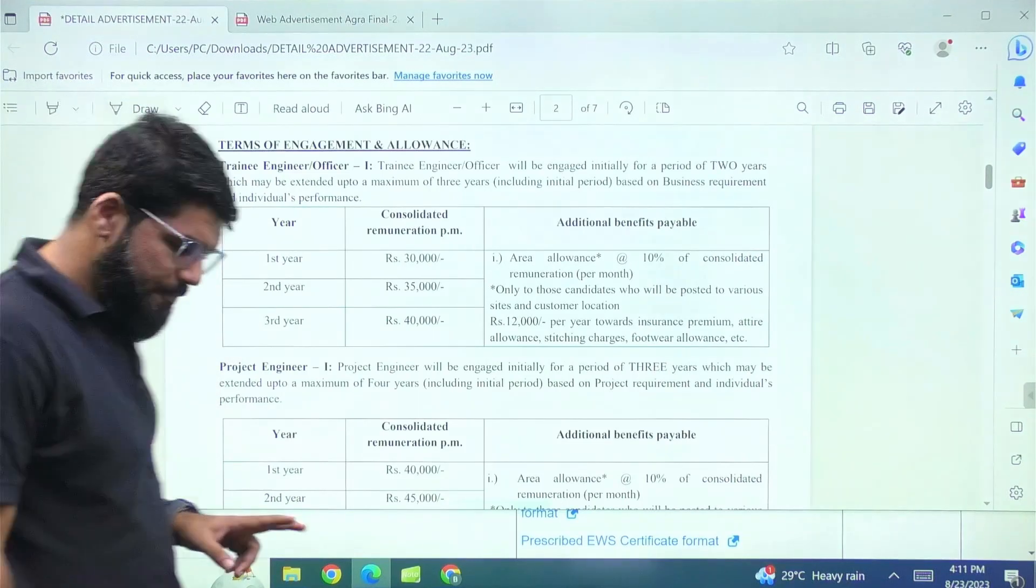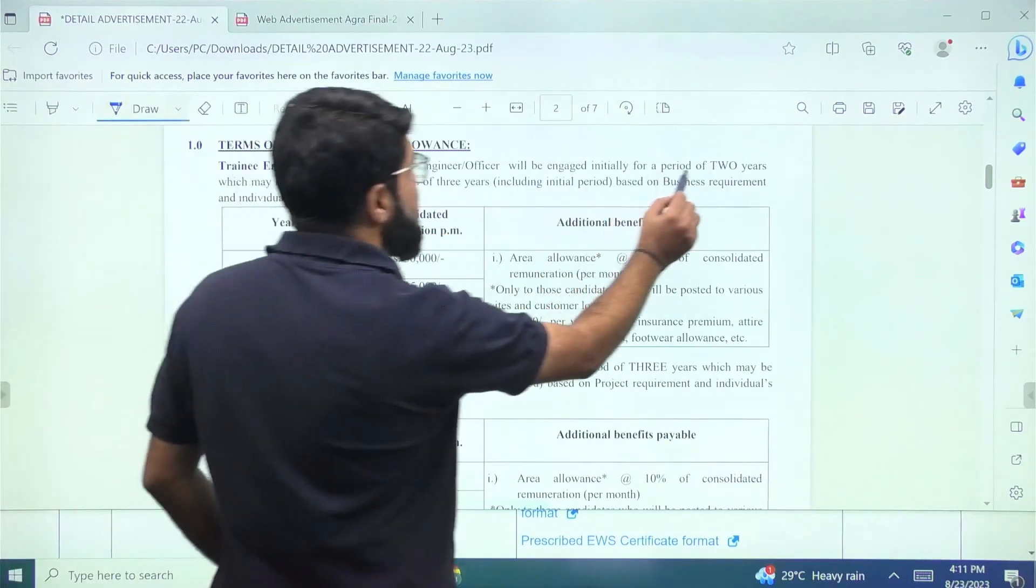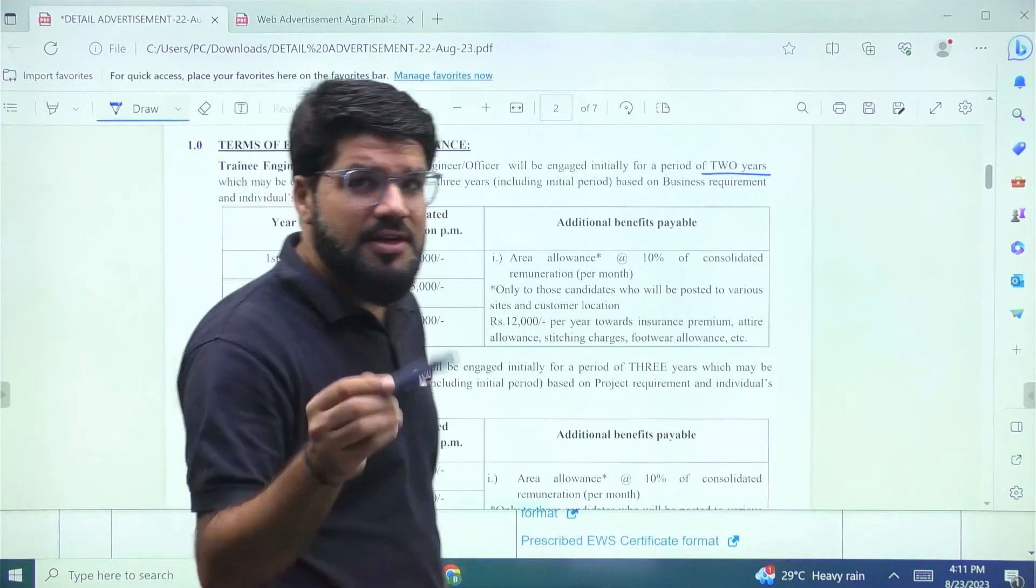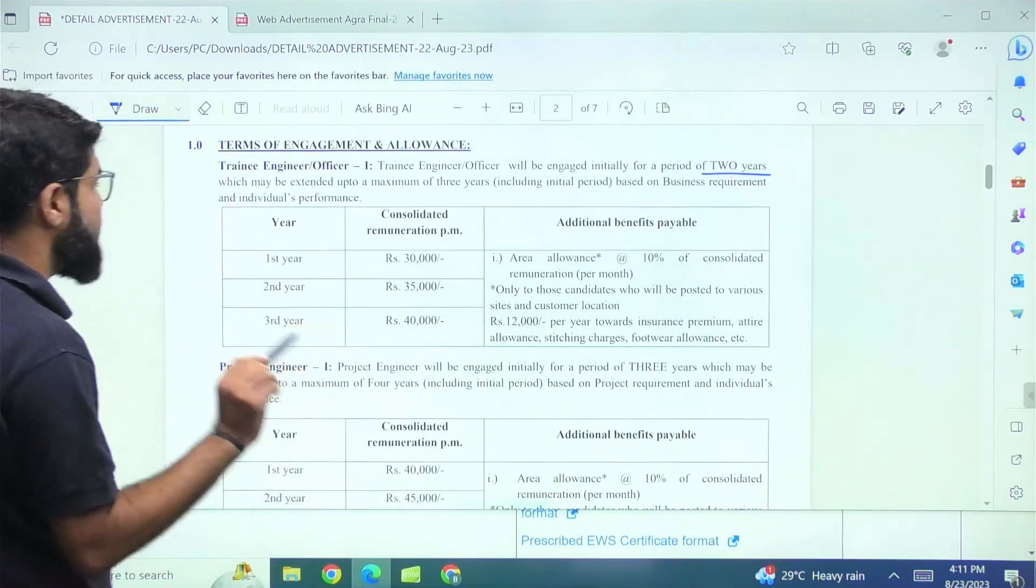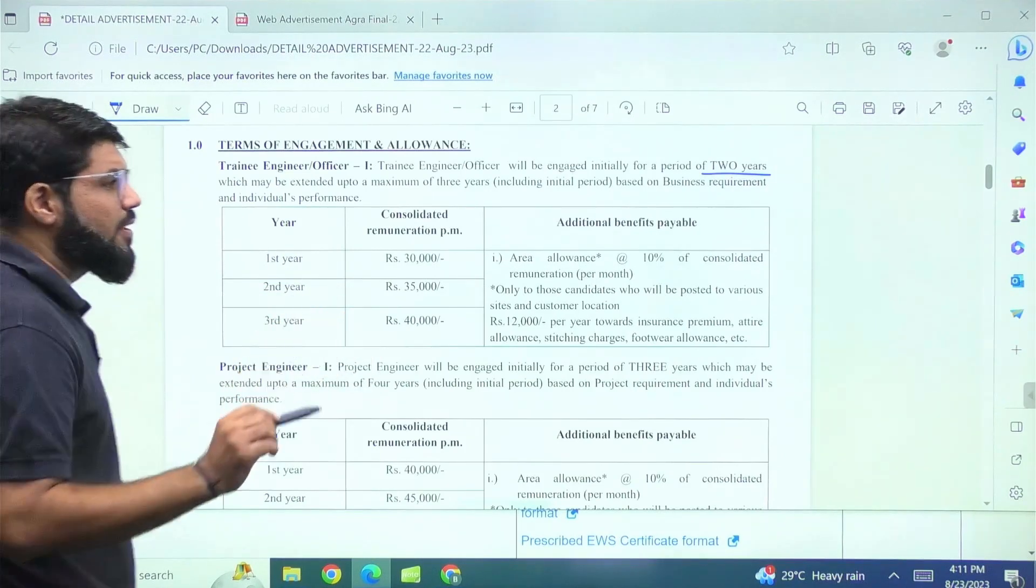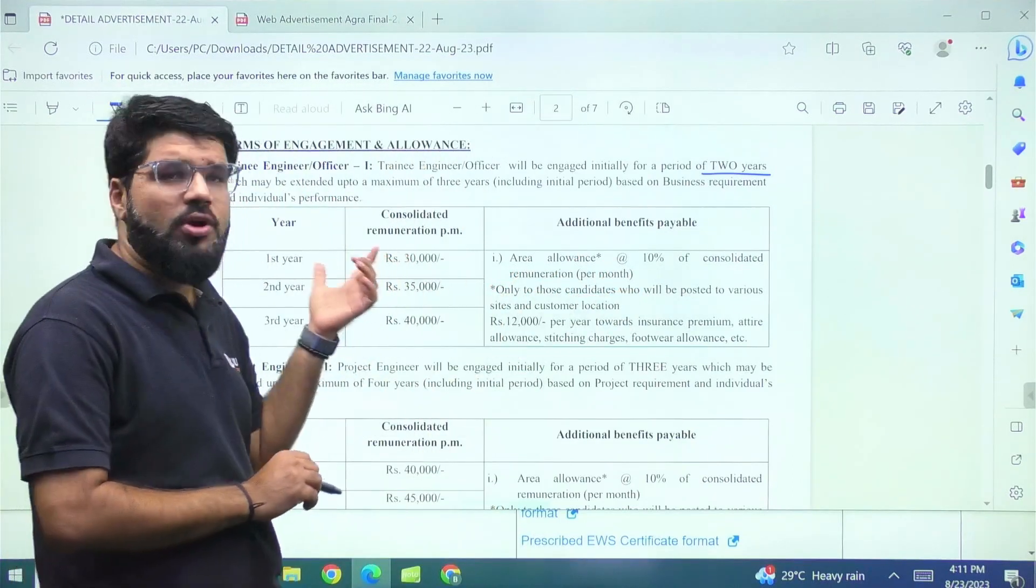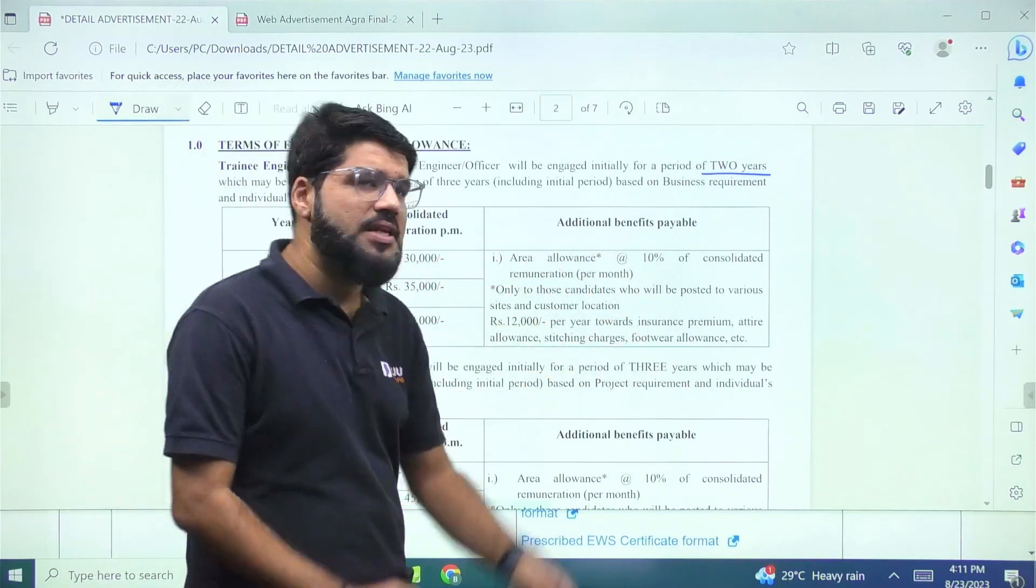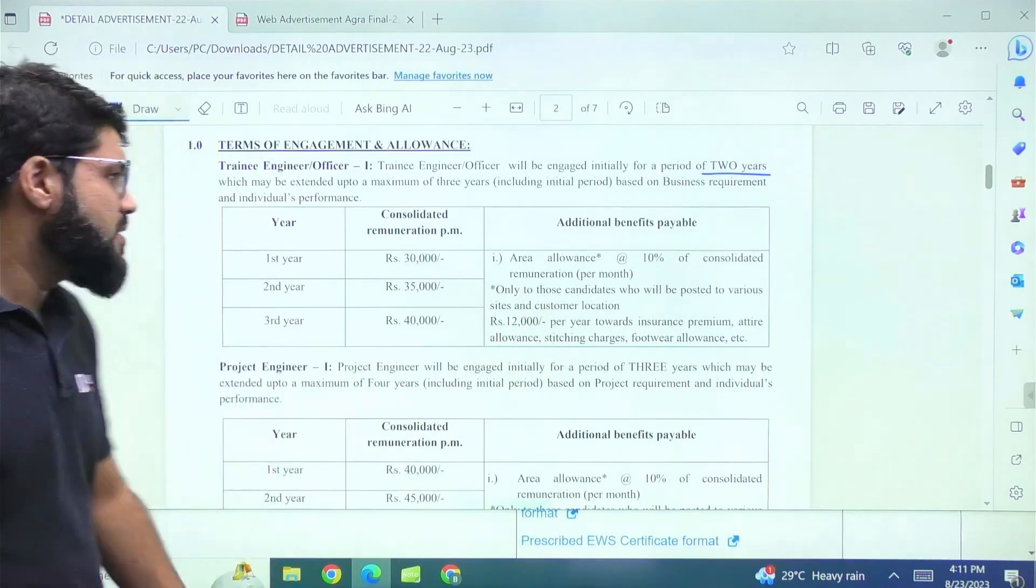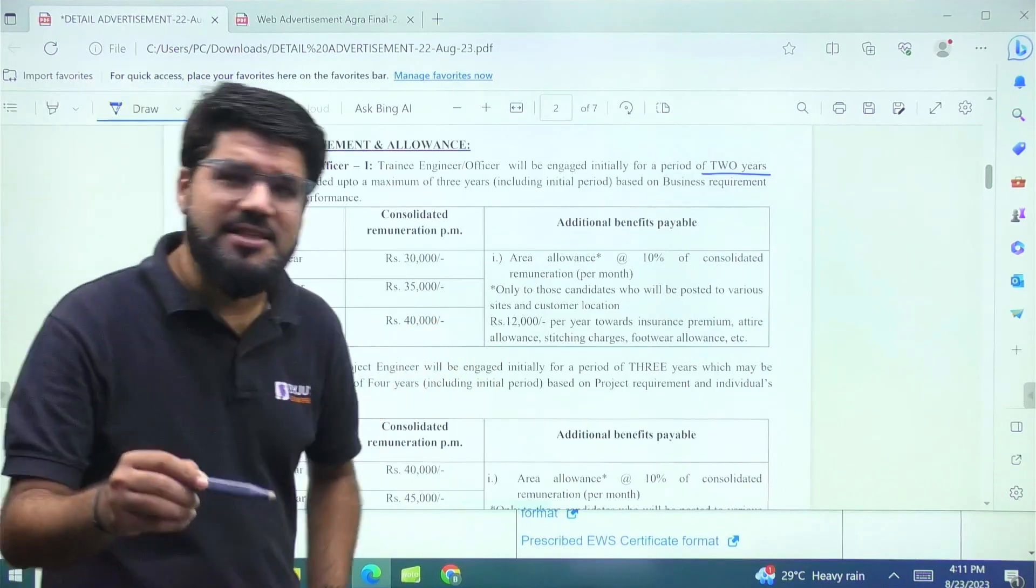8 for computer science, 29 again for electronics and mechanical also has very few, it is 3 for mechanical as well. But this particular project engineer requires a minimum of two years of relevant experience in the domain and the age limit for this upper age limit is 32 years. So let's move ahead towards some of the other important updates. For the trainee engineer, you can clearly see trainee engineer will be engaged initially for a period of two years, which may be extended up to a maximum period of three years. So that is what is the contractual period that is mentioned.